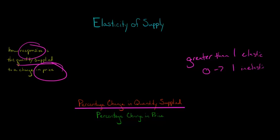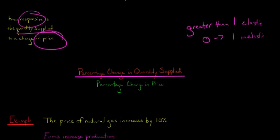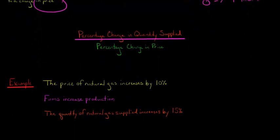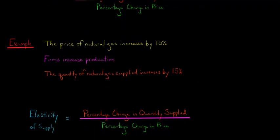I want to give you an example and show you how to calculate the elasticity of supply. Let's say the price of natural gas increases by 10%, and firms in response increase production to get more natural gas. As a result, the quantity of natural gas supplied increases by 15%. Now let's calculate the elasticity of supply using those figures.